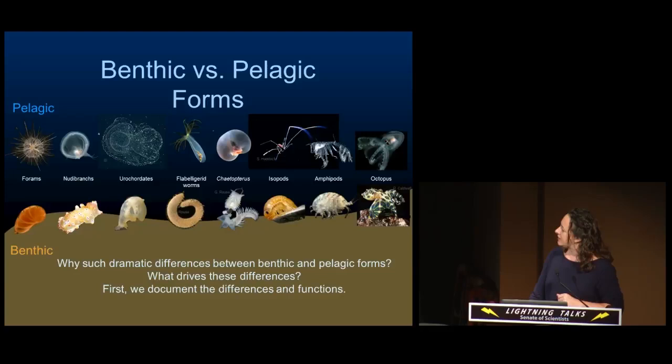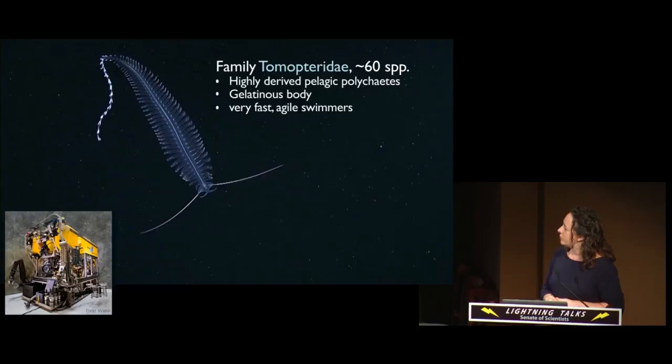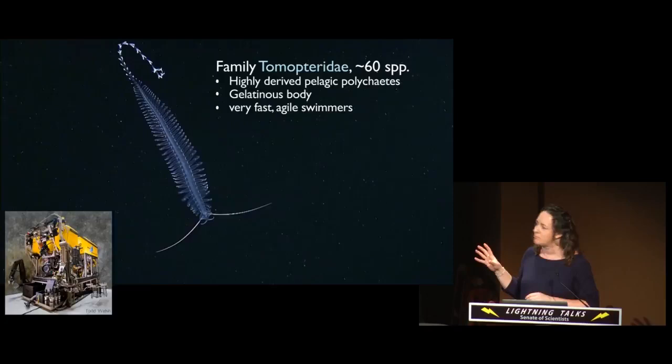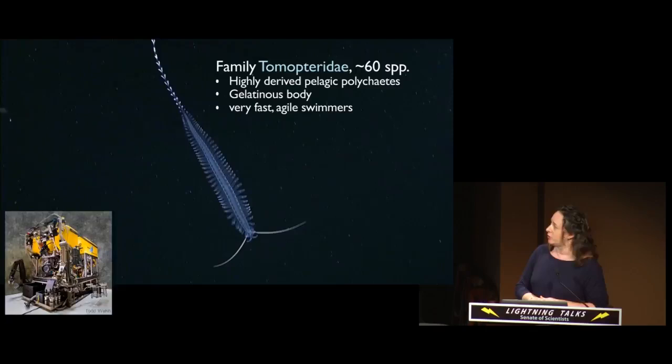To start getting at that question, we first have to document the differences in the functions, because we know very little about the animals that live out here. About a year ago, I had the opportunity to work with a new scientist at the Monterey Bay Aquarium Research Institute and to look at the biomechanics of some of the pelagic animals. Naturally, I chose my favorite polychaetes — the tomopterid worms.